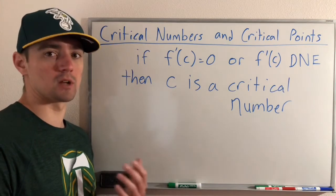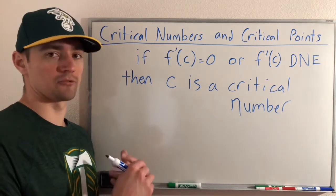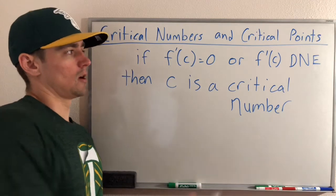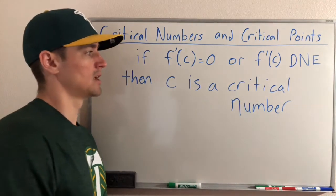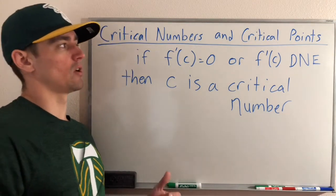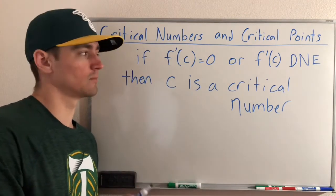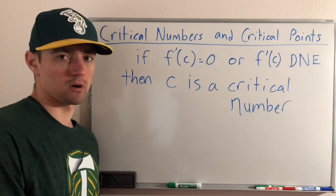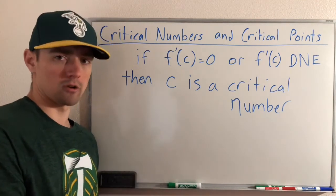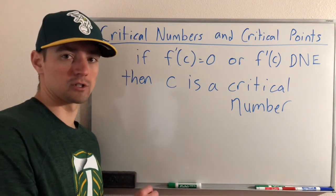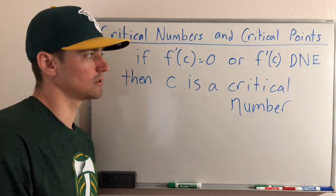What that looks like on a graph is where your function has a flat slope. Or if your function's derivative doesn't exist at that point, then c will be a critical number. And then if you're trying to find a critical point — a point is just an x-y coordinate — so if you have the critical number, which is the x value, you just plug that x value into your original function to find the corresponding y value. That's really all there is to it.